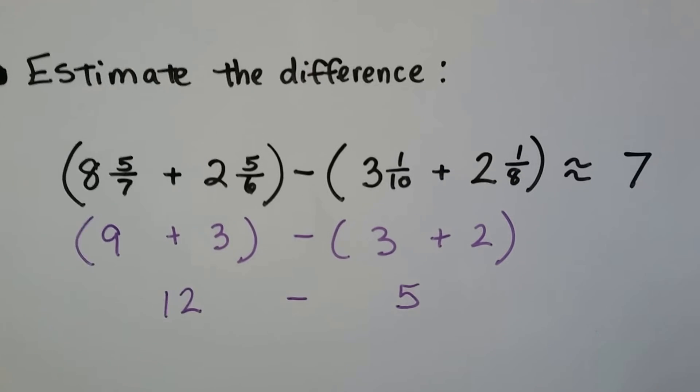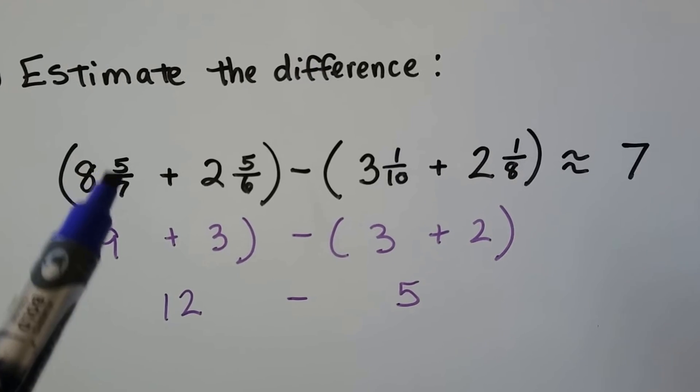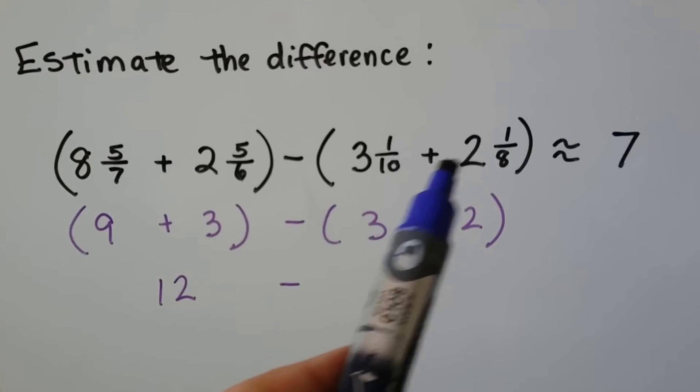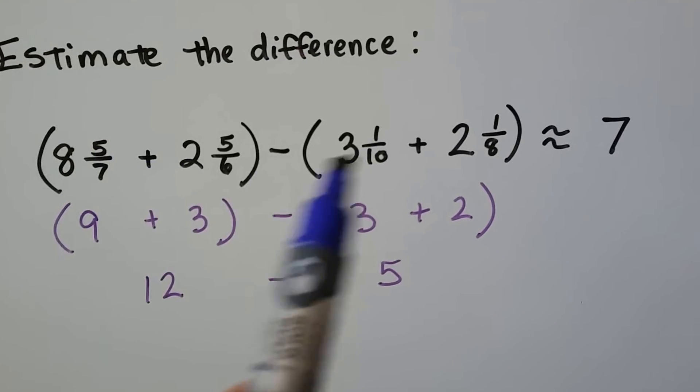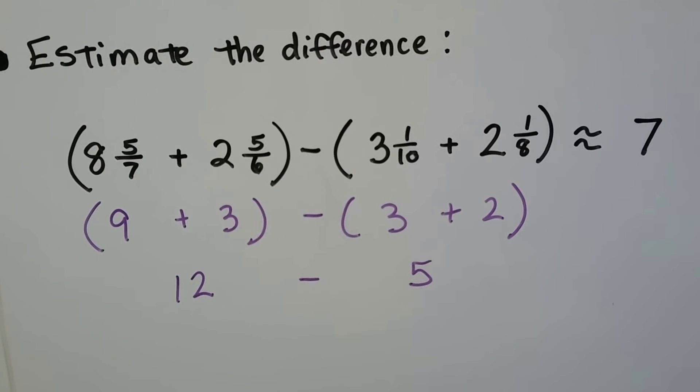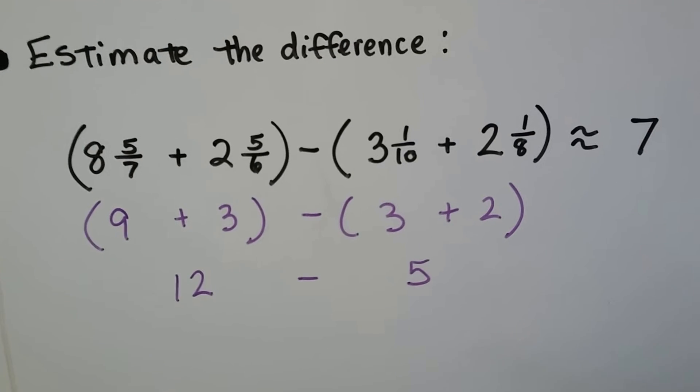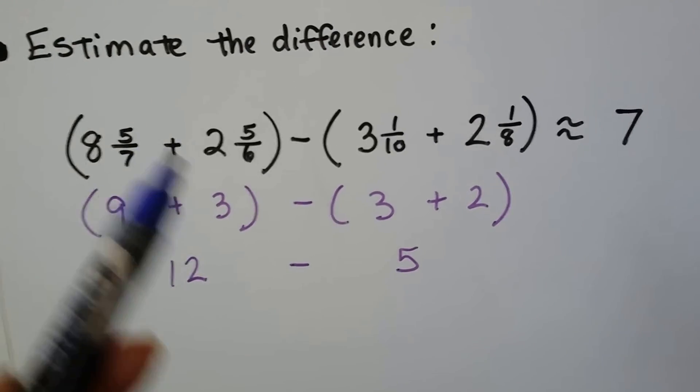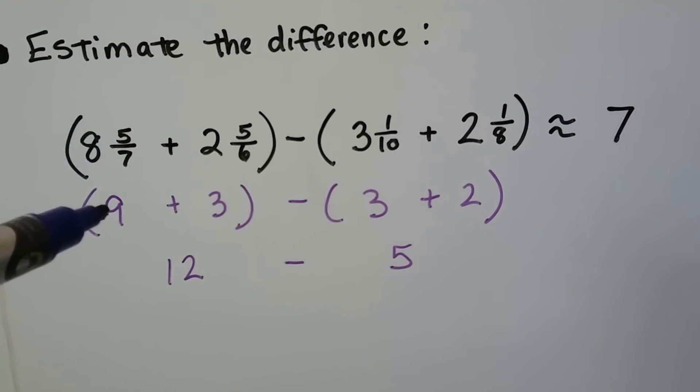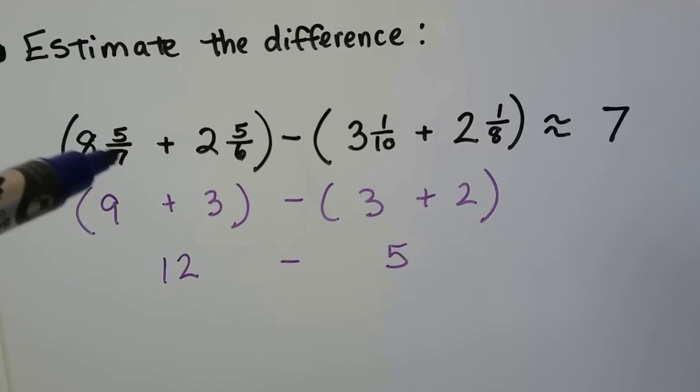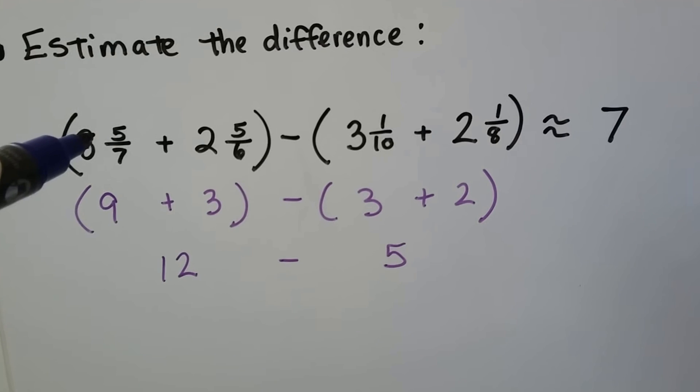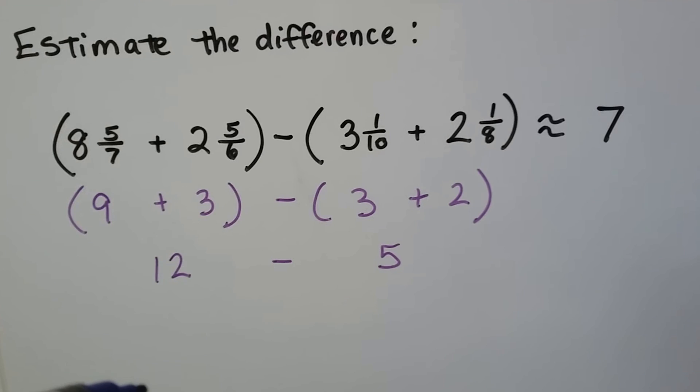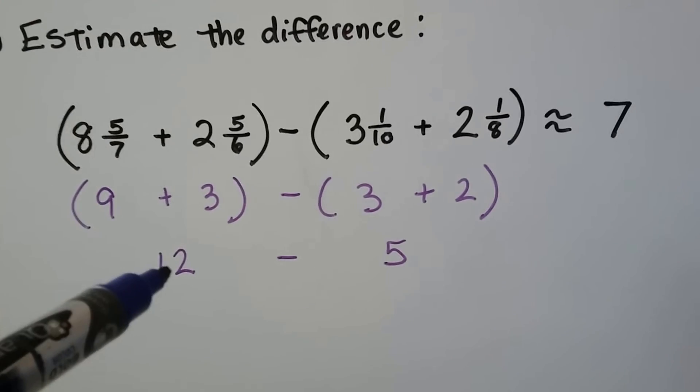Estimate the difference. We're adding 8 and 5 sevenths plus 2 and 5 sixths, and we have to add 3 and 1 tenth plus 2 and 1 eighth, then subtract this from that. From the order of operations, we do inside the parentheses first. We round 8 and 5 sevenths to 9 because 5 is more than half of 7. And 2 and 5 sixths rounds to 3 because 5 is more than half of 6. So we've got 9 plus 3, which is 12.